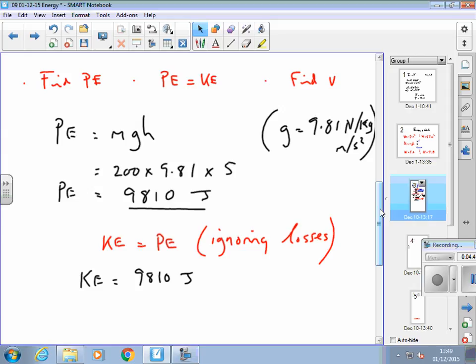If a problem said so much energy is lost through friction, or 10% is lost through friction, I would have to adjust that figure at this point, wouldn't I? But at the moment we're ignoring it. So 9,810 joules.